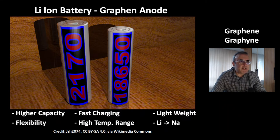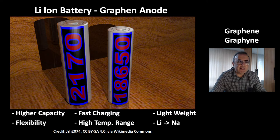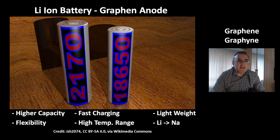The graphene anode is interesting for the lithium-ion battery — it gives it a higher capacity, fast charging, it is lightweight, flexible, and has a high temperature range. And with the help of graphene you could replace lithium with sodium, which would give you a cost benefit.